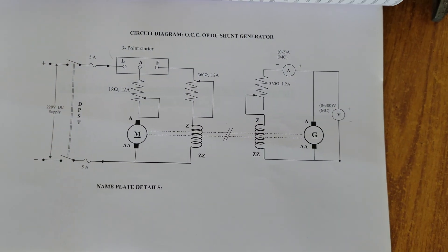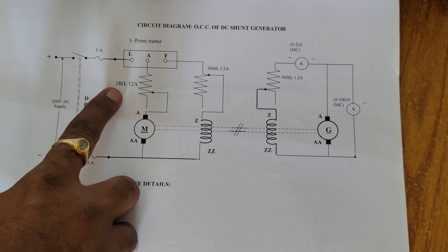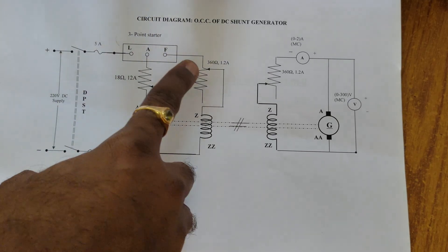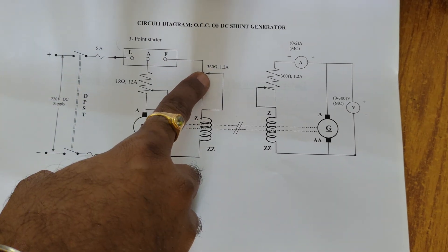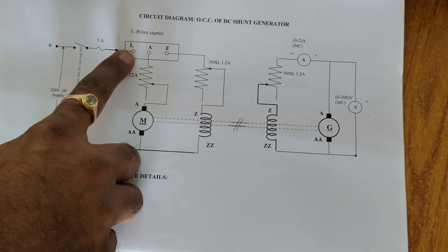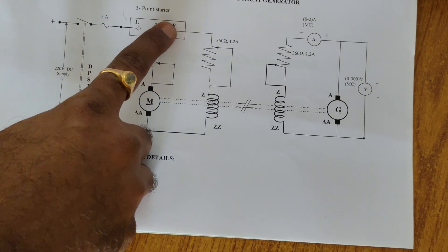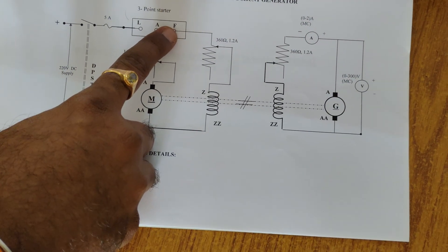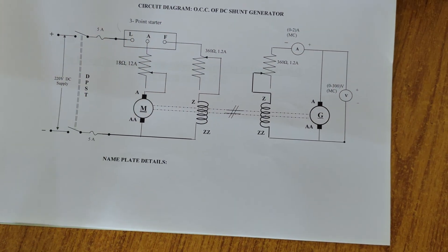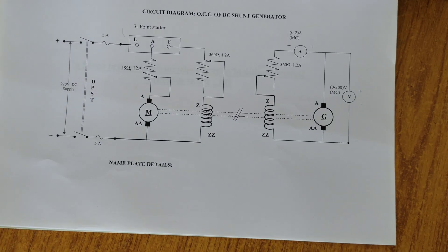I would like to explain each and every component right now. The first one we have is an 18 ohms rheostat, a 360 ohms rheostat, and we have a three-point starter with line, armature, and field terminals. We can clearly visualize those parts in the machine itself.